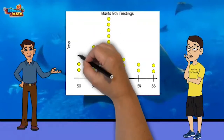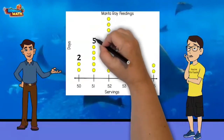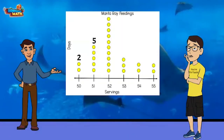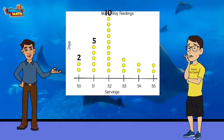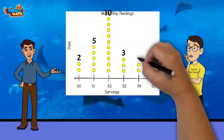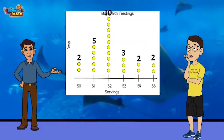Correct. Two days in February, 50 servings were sold. Five days of the month, 51 servings were sold. Ten days of the month, 52 servings were sold. There were three days where 53 servings were sold and two days where 54 and 55 servings were sold. Correct, Gilbert.